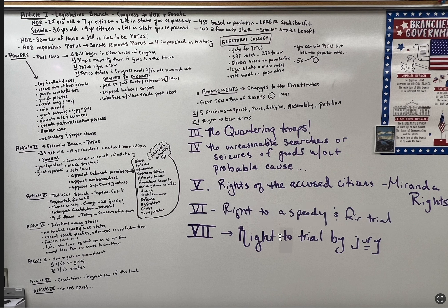The Seventh Amendment is the right to a trial by jury, meaning you can't just get arrested and thrown in jail because a judge says you're guilty. You have to go before a jury. Judge Judy is different because those people are just suing for financial purposes, but for something like murder or rape, you're going before a jury.